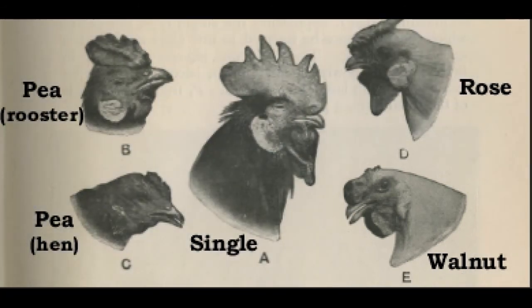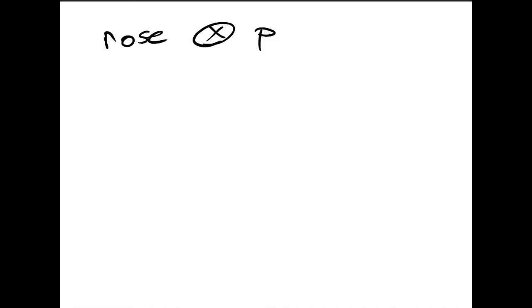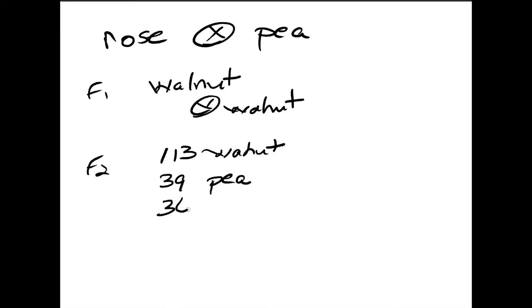The F1 walnut comb chickens were mated among themselves to produce an F2 generation. Let's diagram this cross. Roses crossed with pea and all of the F1 are walnut. When these walnut F1 chickens were mated among themselves, the F2 had 113 walnut, 39 pea, 36 rose, and 12 of an altogether different phenotype called single.